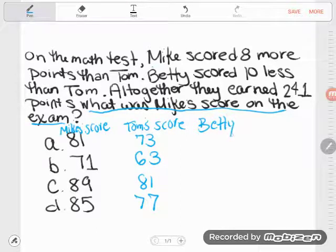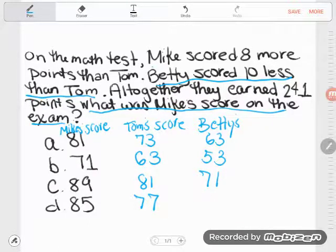Now let's look at Betty's score. I see this phrase: Betty scored 10 less than Tom. So if Tom was a 73 then Betty would be a 63. If Tom was a 63 then Betty would be a 53. If Tom was an 81, Betty would be a 71. And if Tom was a 77, Betty would be a 67.